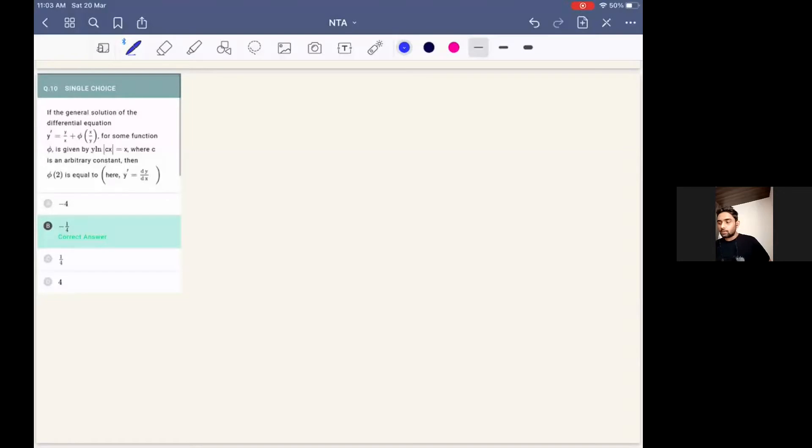So we can see the question on the screen. The question is: if the general solution of the differential equation y dash equals y by x plus phi of x by y for some function phi is given by y ln mod cx equals x, and we have been asked to find the value of phi(2). Now as we can see in this question, we are given both the differential equation and the equation.